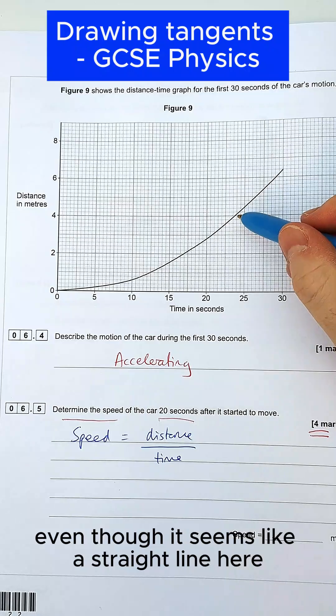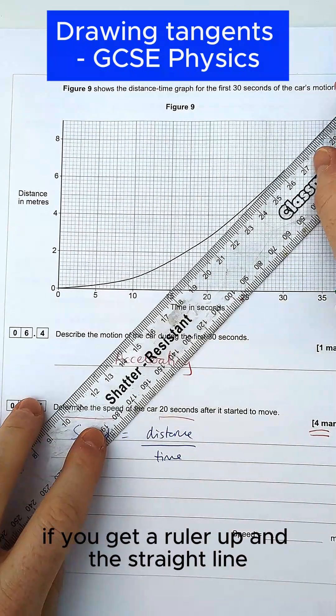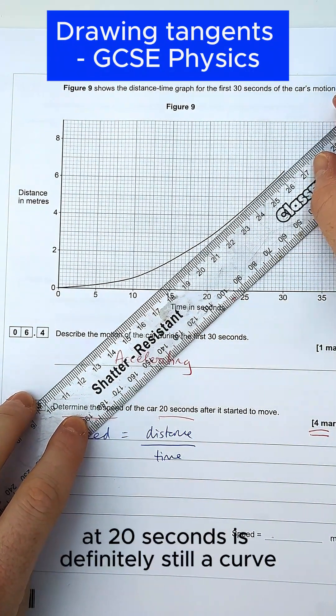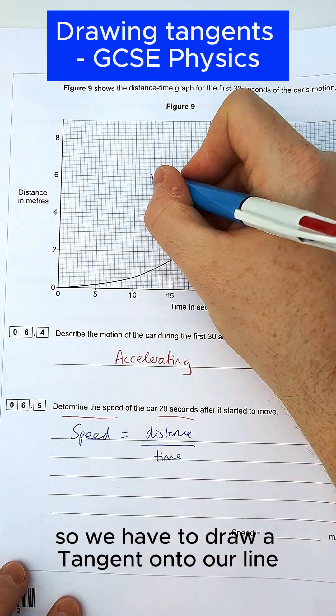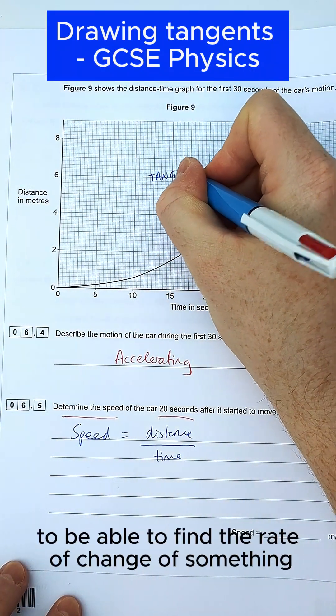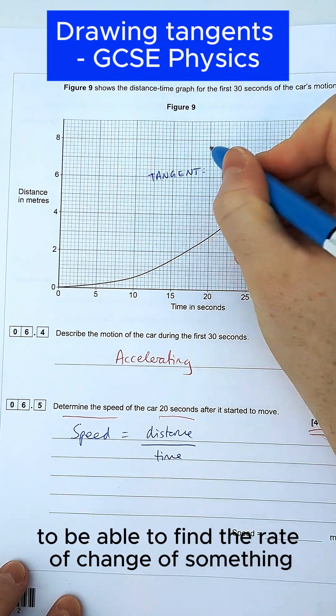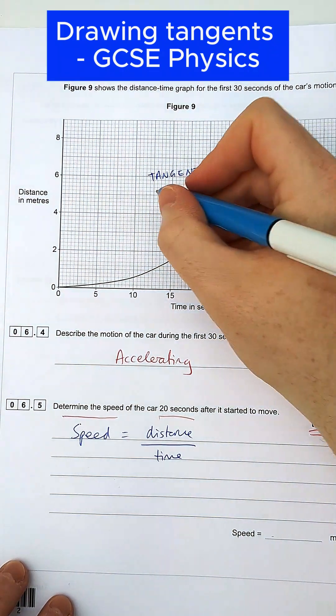Even though it seems like a straight line here, if you get a ruler up, the straight line only really starts getting straight after about 25 seconds. At 20 seconds it is definitely still a curve. So we have to draw a tangent onto our line to be able to find the rate of change for a curved line.